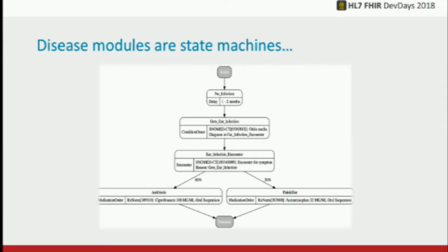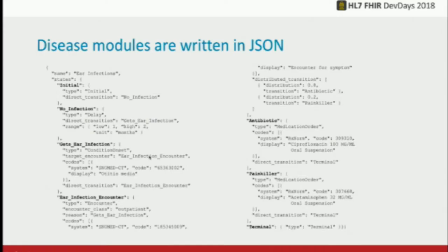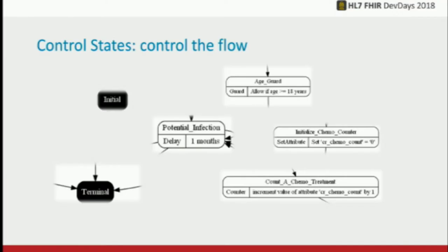The disease modules are state machines. I'll get a bit more into it, but basically you have different states and the patient flows through these, and it creates the record. This is a visualization of the state machine, but they're written in JSON. You can see the initial state, the state names, and different information. You don't necessarily need to write JSON though, because we have a nice editor if you want to play around with the different disease modules.